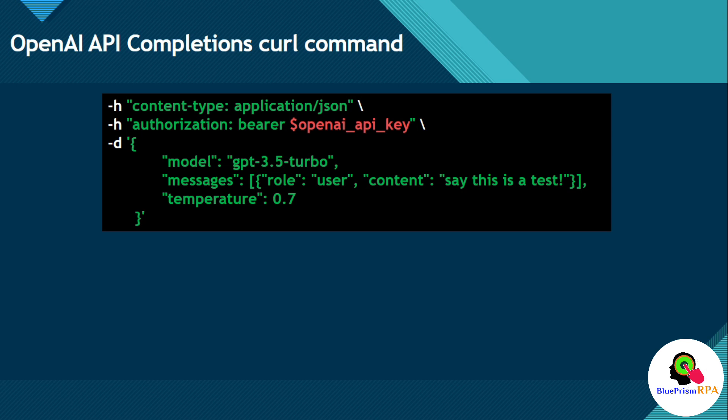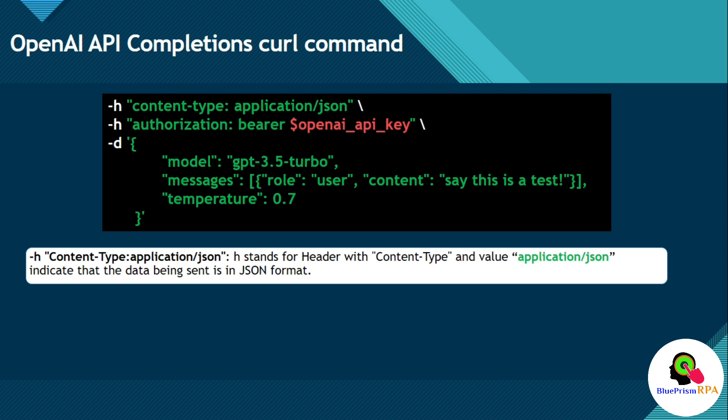-H stands for header, with the content-type value application/json. JSON stands for JavaScript Object Notation. This indicates that the data being sent is in JSON format, so we are going to send the data to the API server in JSON format. The authorization header with bearer and the OpenAI API key includes an authorization header with an API key for authentication.